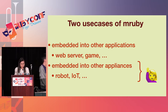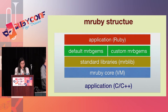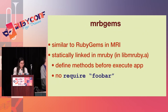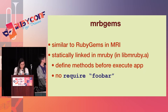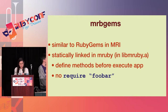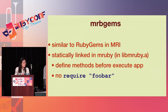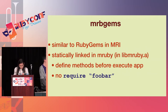We will talk about the latter case. This figure shows the structure of an MRuby application. We can use three types of libraries: MRuby lib, default MRuby gems, and custom MRuby gems. MRuby gems are libraries like Ruby gems for MRI. MRuby gems are loaded during compilation, not execution, so we do not use the require method in MRuby code.